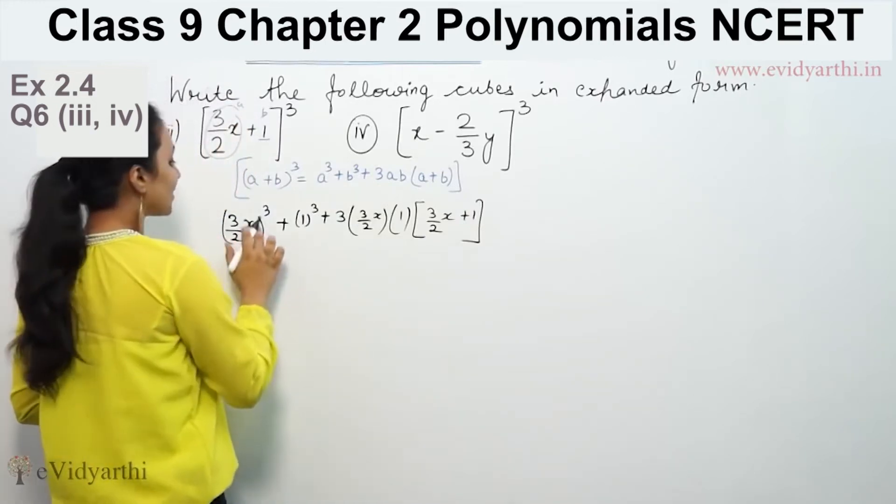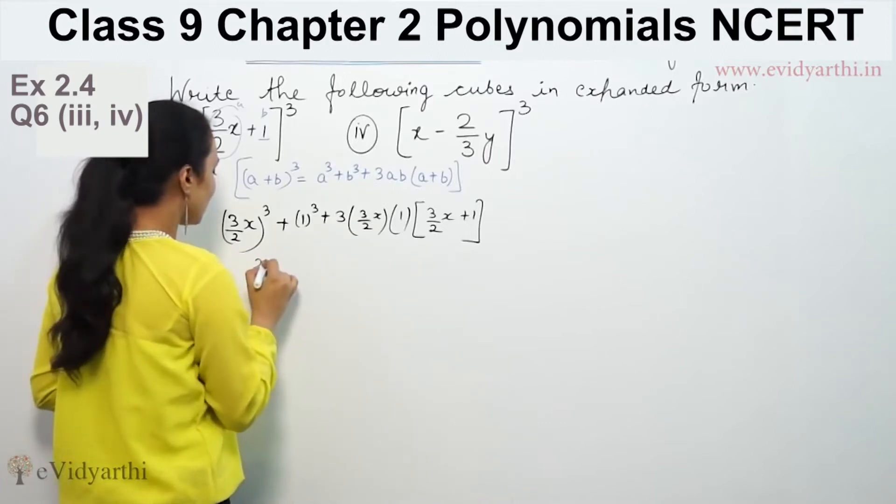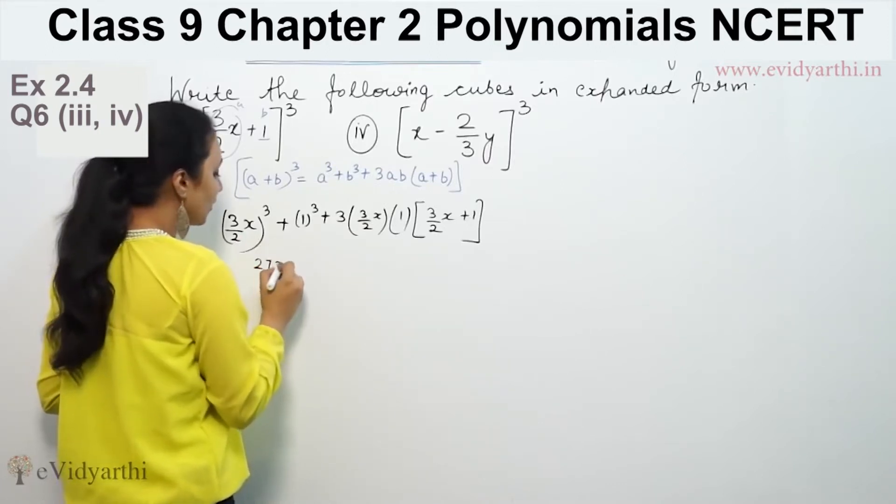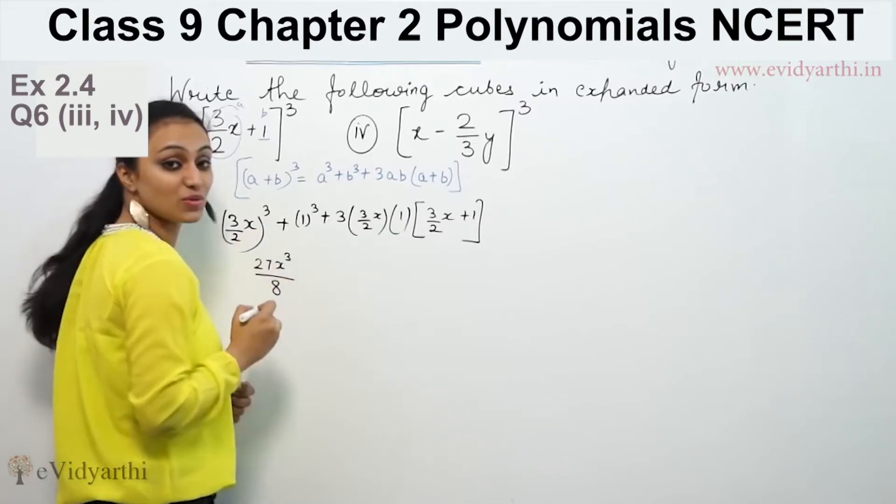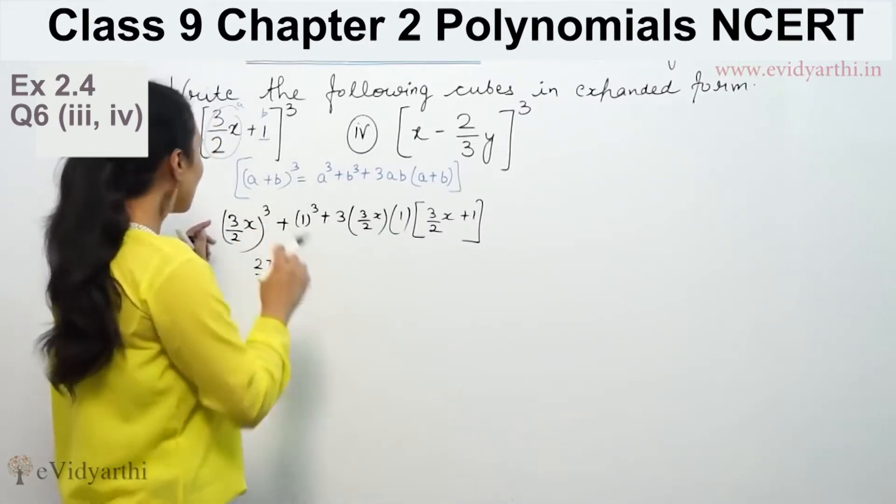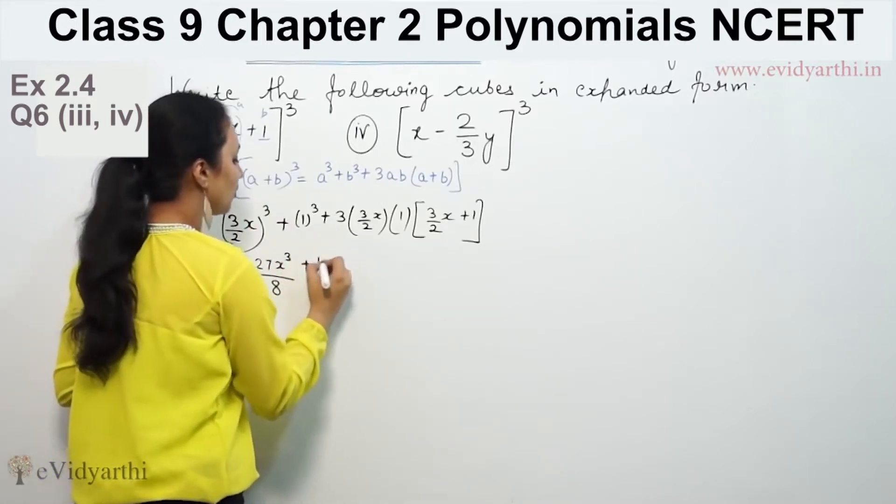So (3/2x)³: 3³ is 27, x³ is x³, and 2³ is 8, so we get 27x³/8. Plus 1³ is 1.